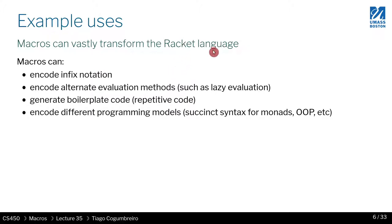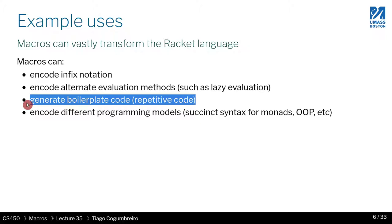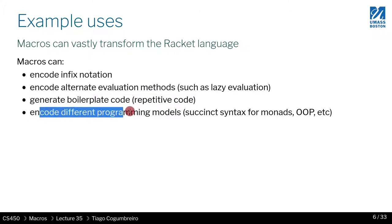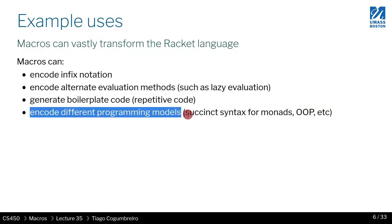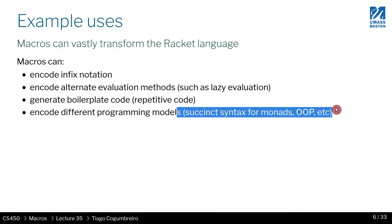Macros actually power the Racket language — a lot of the features you have access to are created by means of macros. They can encode infix notation, encode alternative evaluation methods, and be used to generate boilerplate code. For instance, how structs work with accessors like name-of-struct minus some field can all be generated with a macro system. You can also encode different programming models — most techniques in programming languages are not that complicated to implement, and macros can wrap them in a nicer syntax, like wrapping a library of promises in more intuitive syntax.